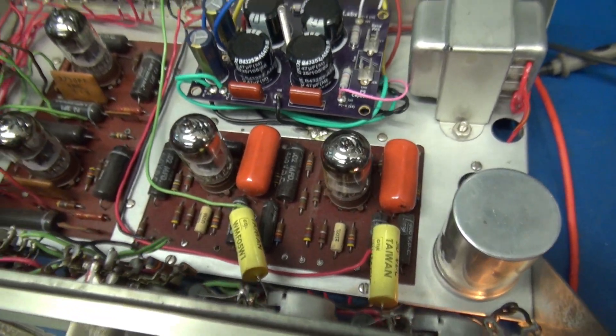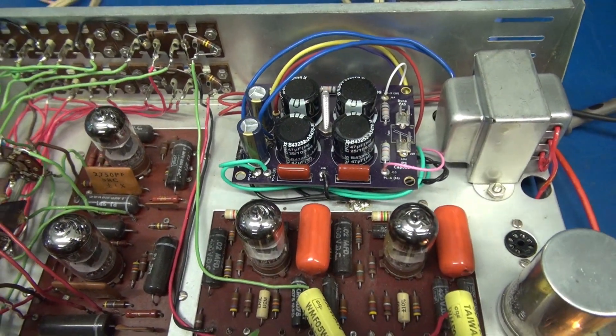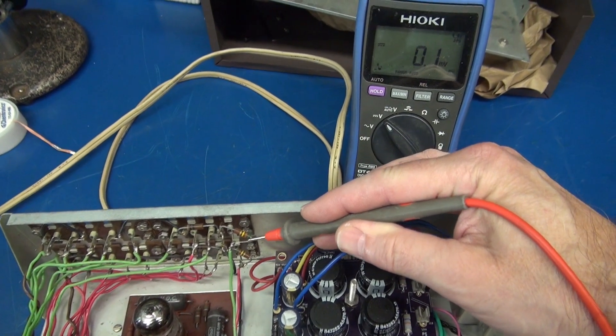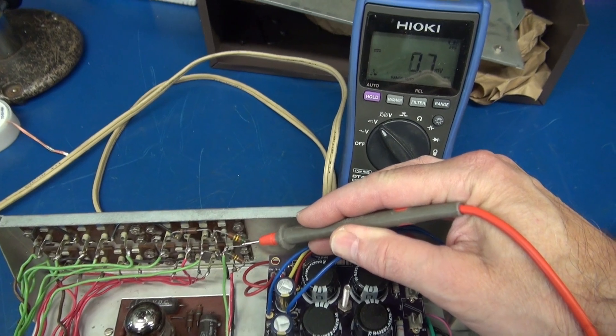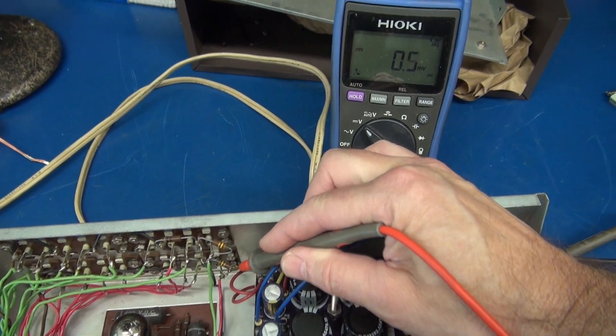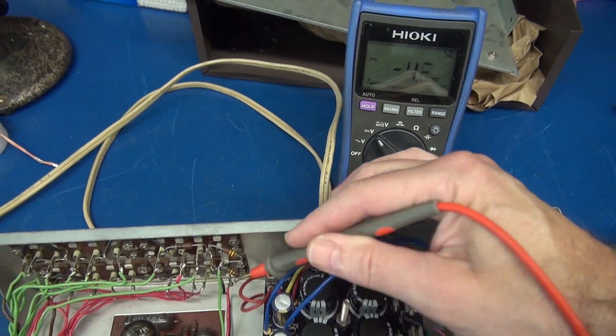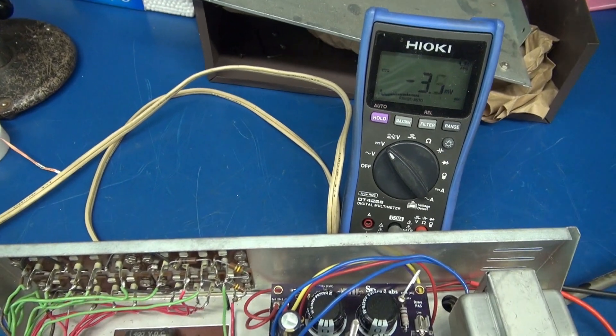Let's see if we have voltage on those output jacks. The unit's powered up. Let's check for DC voltage on the output jacks. There is the left. There is the right. Remember, the right had 0.8 volts. Problem solved.